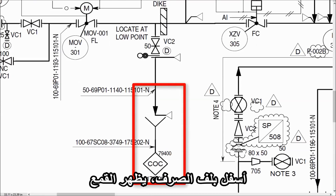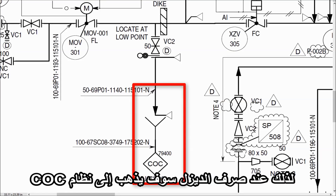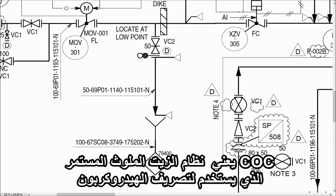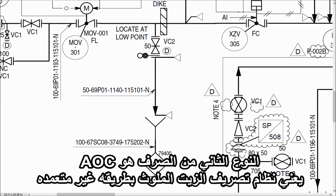Below the drain valve, the funnel is shown. So when you drain ULSD, it will go to the COC system. COC means Continuous Oil Contaminate, which is used to drain hydrocarbon. The second type of drain is AOC, which means Accidentally Oil Contaminated system.